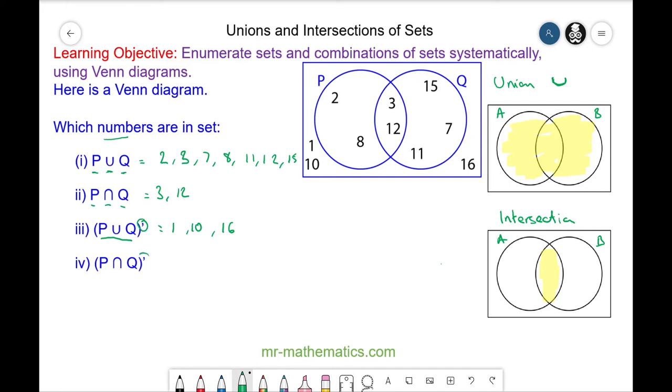And we have not P intersecting with Q. Well this is where P does intersect with Q. So everything else is where P does not intersect with Q. And this identifies the elements of 1, 10, 2, 8, 11, 7, 15, and 16.